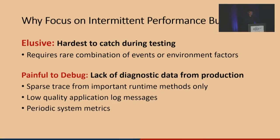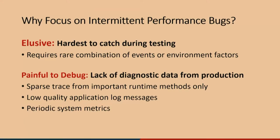But why do we focus on intermittent performance problems? Are there other bugs like fail-stop or crashes which are more important? Not really, for two reasons. First, code changes have to pass through many stages of function and performance testing on the app developer and system vendor side before they can be shipped to production. As a result, the bugs that are caught in testing are highly elusive — they require a very rare combination of events and environmental factors to trigger, exactly like intermittent bugs. The second reason is that intermittent performance bugs are the most painful to debug because engineers don't have sufficient diagnostic data. Only extremely sparse traces are available, sometimes very low-quality application logs, and Google officially recommends turning all logs off before release. Finally, there are some periodic stats between system and hardware layer.